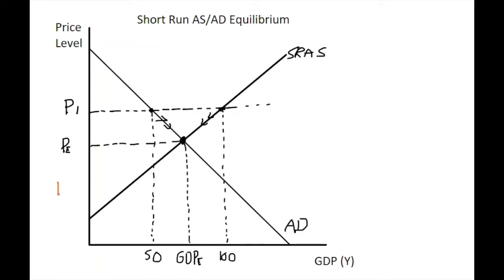If we take the other example where the price level is relatively low at P2, the short run aggregate supply is around 30 billion in the economy while aggregate demand is up at about 100 billion. We have very little output compared to expenditure, and we'll see that inventories and stock levels of firms will start to reduce rapidly. This will be a signal for firms to start increasing the price level, and we should get back to our equilibrium price. So whichever way we start, the tendency should be towards equilibrium where aggregate expenditure equals aggregate output with an associated price level.